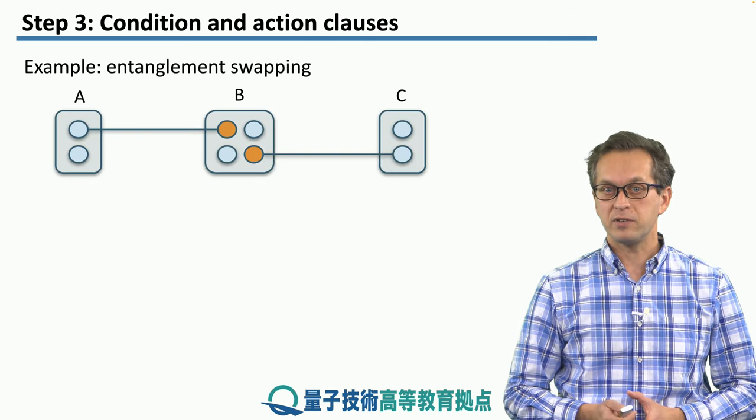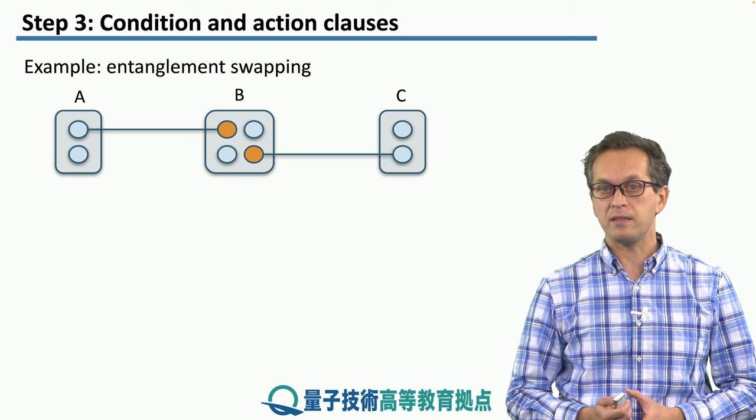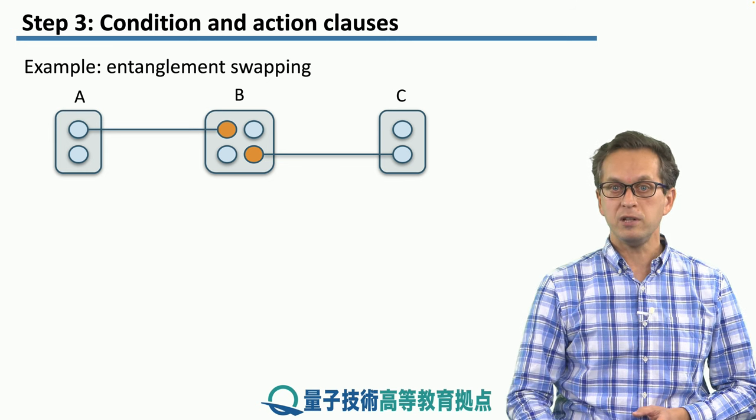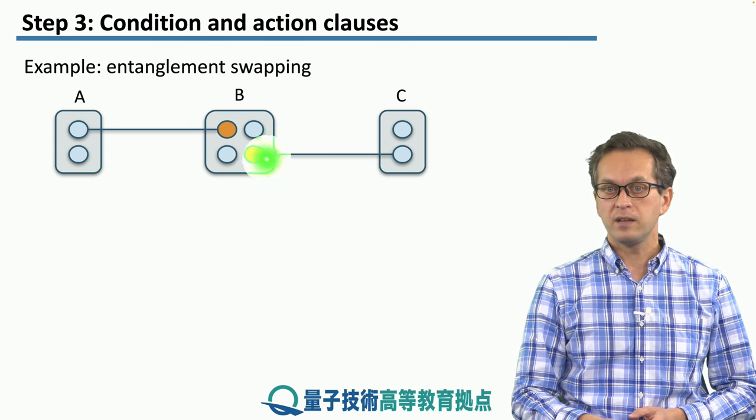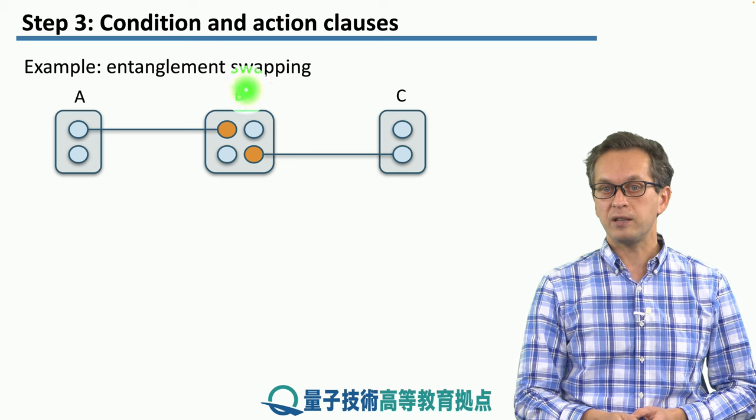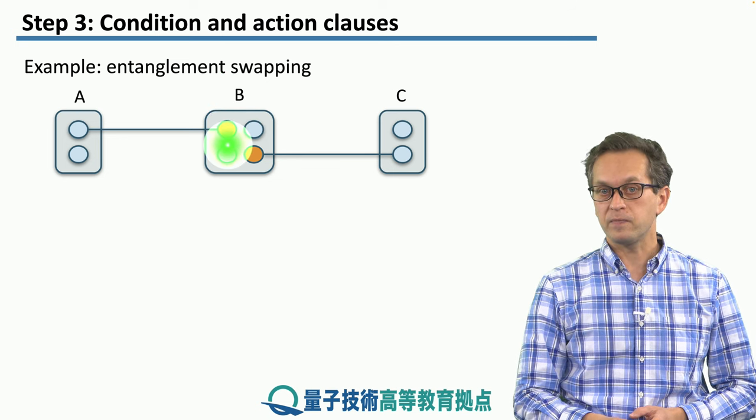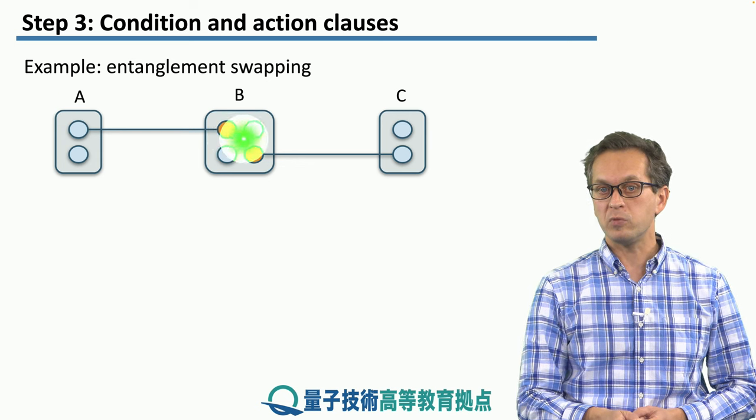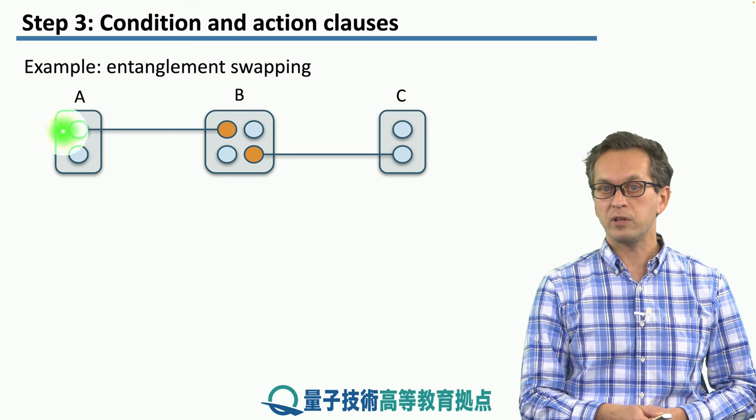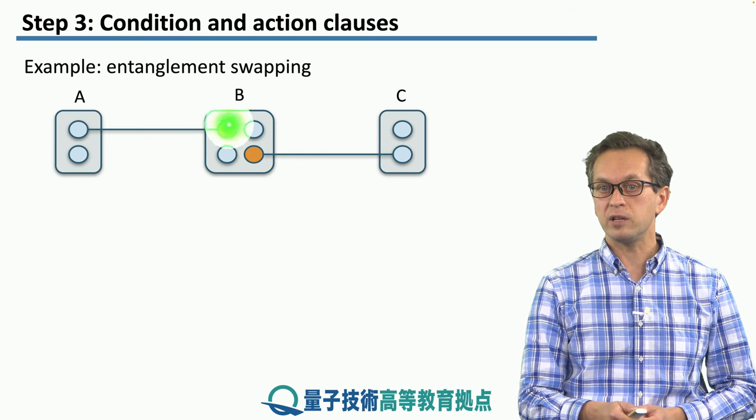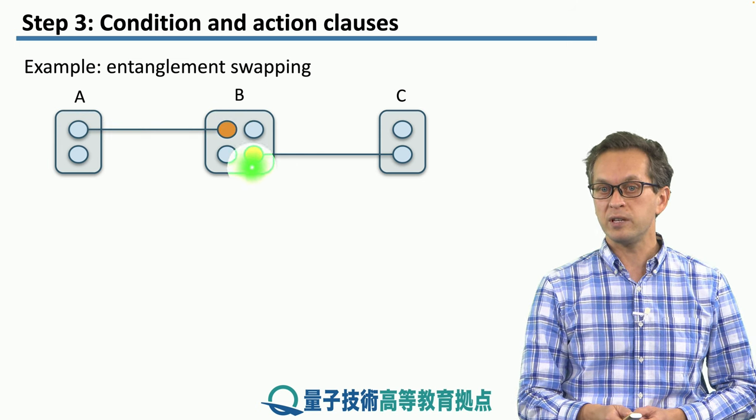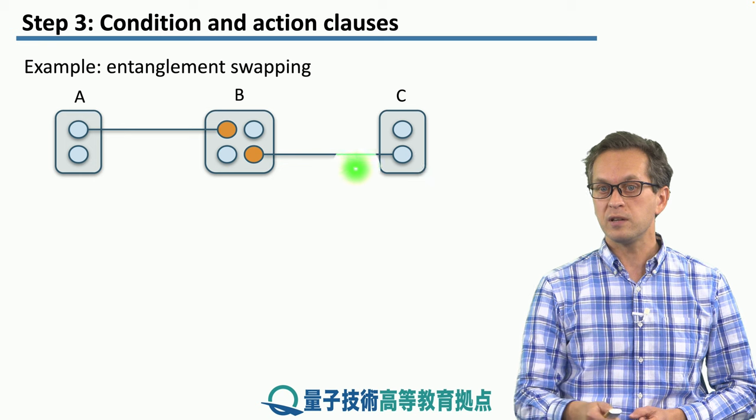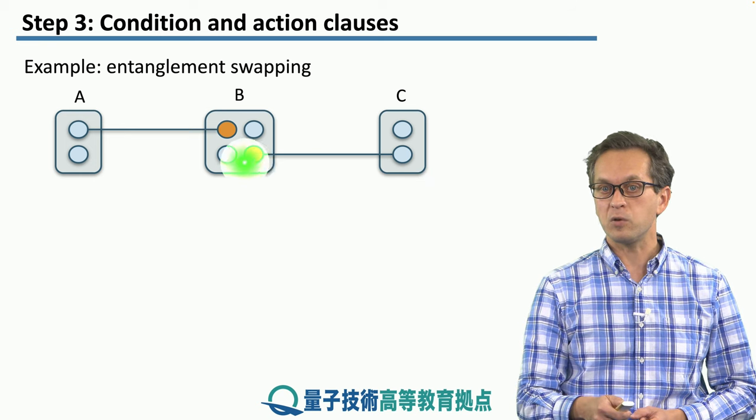Let's look at some examples. The first example we are going to consider is entanglement swapping. We've got three nodes, A, B, and C, and we are going to perform entanglement swapping on node B. In this case, we are sharing bell pairs between these two qubits of quantum memory at node A and this orange memory at node B, and also B is entangled with node C via this link over here.